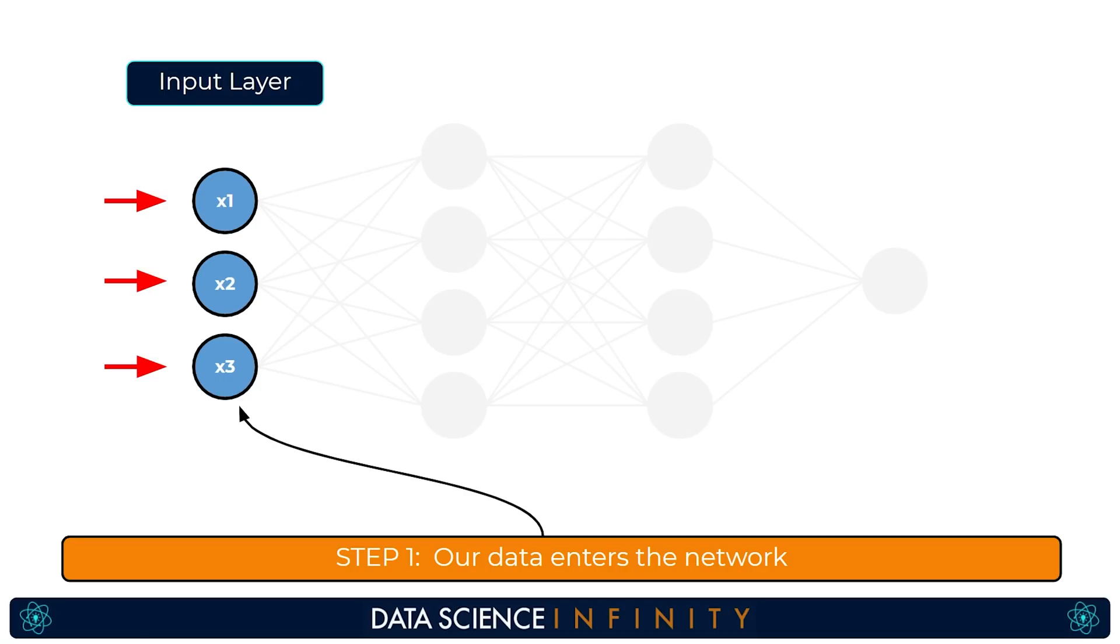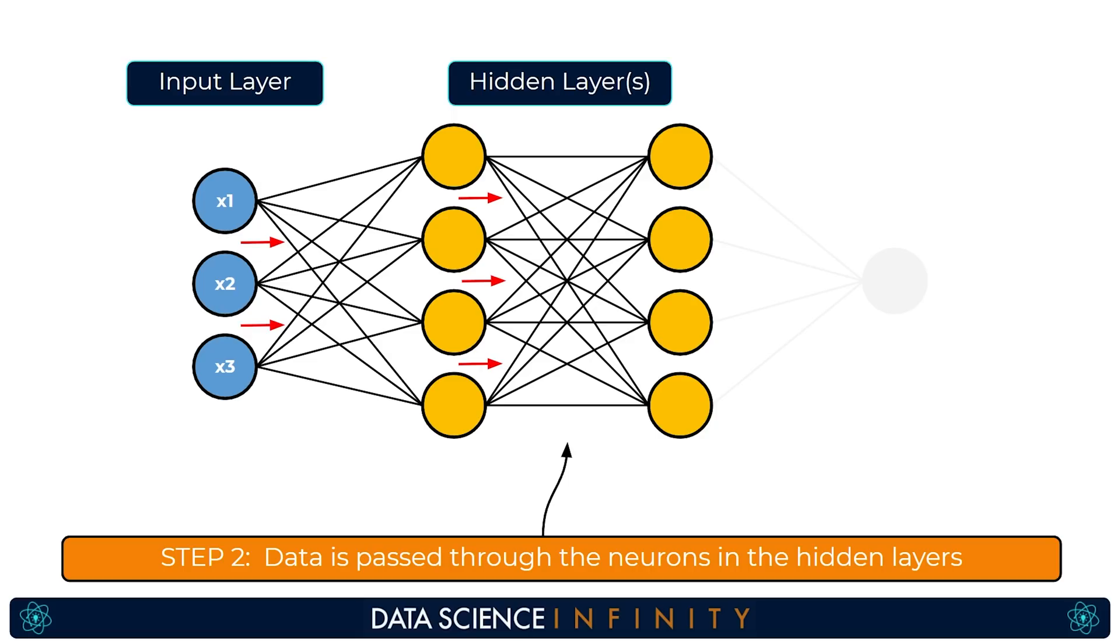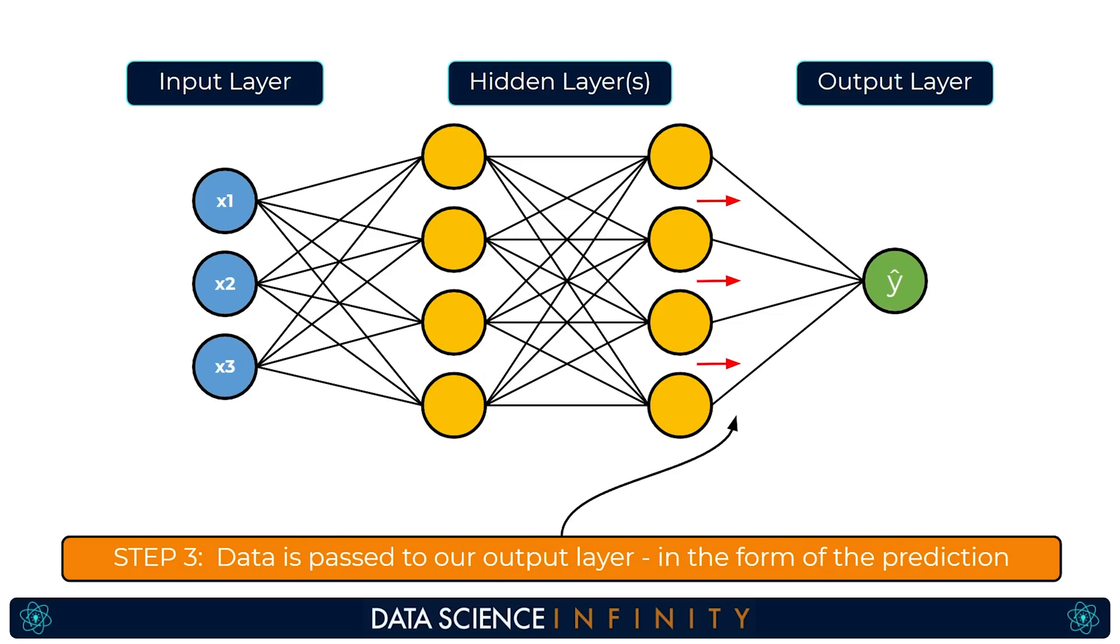Firstly our data enters the network via the input layer with a neuron for each input feature. From there these values are passed to and then through our hidden layers starting with randomly assigned weighting values on each connection and activation functions on each neuron determining what is passed on to the subsequent layers and ultimately the output layer where we get our predicted value or in the case of a classification problem our predicted class probabilities.